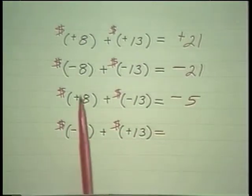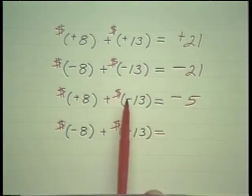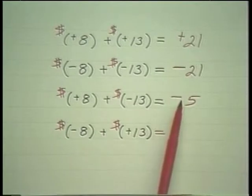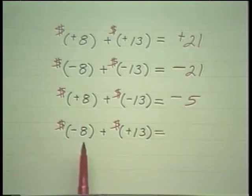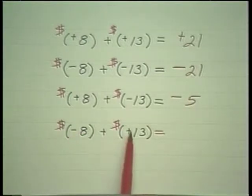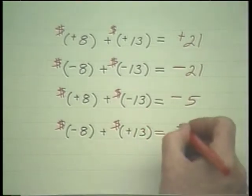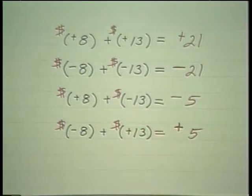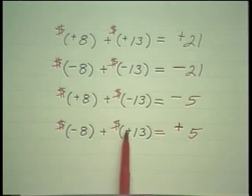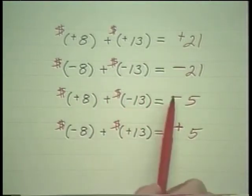Note what we're saying here. A negative plus a negative is negative, and a positive plus negative, in this case, is negative. But in this problem, if I owe eight dollars, then acquire a credit of thirteen dollars, then I have five dollars to the good — or a credit. So here we added two unlike signs and got a positive, and here we added two unlike signs and got a negative.